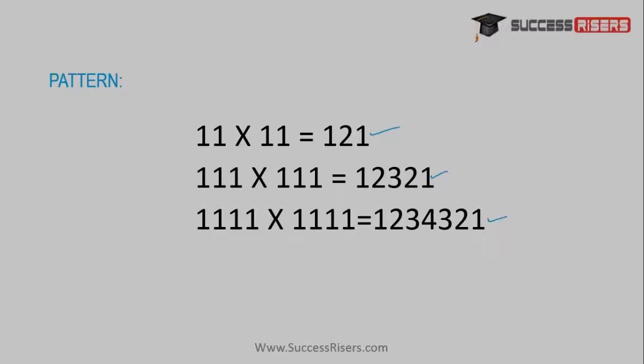If we observe carefully, there's a pattern of numbers. The pattern is that if on both sides of multiplication there are equal number of digits and all the digits are one, then the multiplication goes high up to the highest number of digits and then goes down up to one.